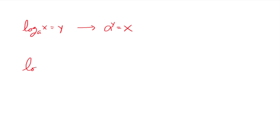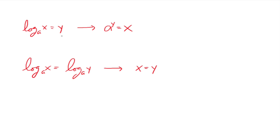The second goal would be: can we write this as one logarithm equals another logarithm, provided you have the same base? Because this means that the two arguments have to be the same. So when solving logarithmic equations, you're trying to write it as one logarithm equals one number — so you can use the definition of a logarithm to rewrite it in exponential notation — or one logarithm equals one logarithm with the same base, and then the arguments must be equal.